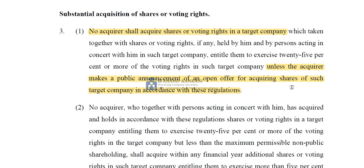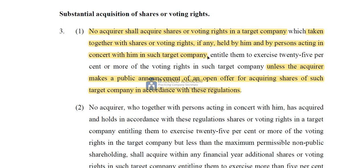Now this restriction is not absolute — it applies in a particular situation. Let's read between the lines. The restriction and the condition to give an open offer applies when whatever shares or voting rights this acquirer has acquired, taken together with shares or voting rights held by him and persons acting in concert with him, entitle them to exercise 25% or more voting rights in such target company.